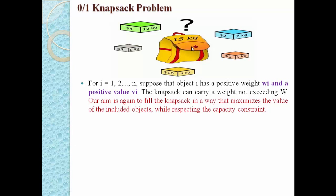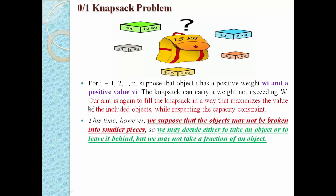Why is this called the zero-one knapsack problem? In this version, an object may not be broken into smaller pieces — we may decide either to take the full object or to leave it behind, but we may not take a fraction. In the greedy method, objects can be divided into different parts when filling the knapsack, but in zero-one knapsack we cannot divide objects. One indicates taking the full object, and zero indicates we are not using a particular object.